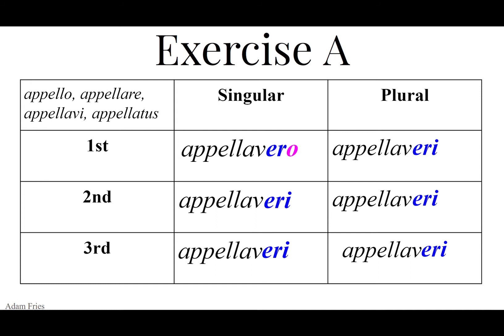And then add the personal endings for the rest of the forms: ES, TI, MUS, TIS, UNT. Appellavero, appellaveres, appellaveret, appellaverimis, appellaveritis, appellaverunt.